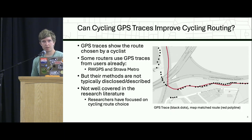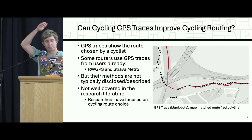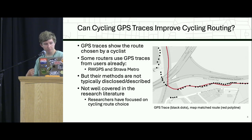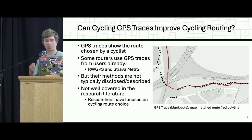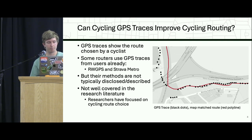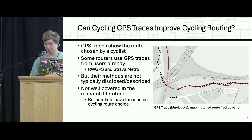I'm wondering if we can use GPS traces to improve cycling routing. A GPS trace is just a series of points that show you where you were, with timestamps and other information attached. I believe some routers are using GPS traces or some aggregated form of them already to improve routing. There are some blog posts by Ridewood GPS that mention this, but the methods usually aren't disclosed and aren't open source.